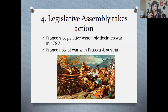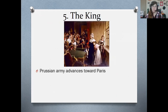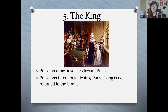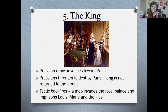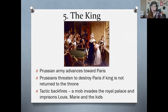Prussia — which would later become part of Germany, in that northern European area — actually invades France and advances towards Paris, the capital. They threaten to destroy Paris if the king is not returned to the throne and does not get all of his power back. This tactic backfires on the Prussians. In fact, a mob of revolutionaries invades the royal palace, and they take Louis XVI, Marie Antoinette, and their children into custody and put them in prison. So at this point, the king is not really a king, because you can't be a king from prison.